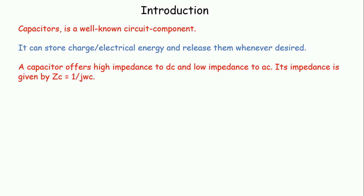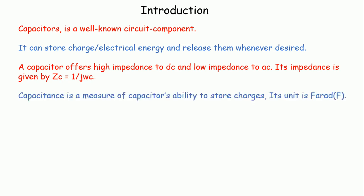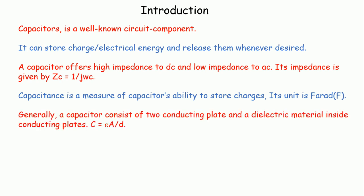C is the capacitance of the capacitor. Capacitance is a measure of the capacitor's ability to store charges — that means how much charge it can store. Its unit is the farad, which is a very large unit. Generally we use picofarad, microfarad, and nanofarad.